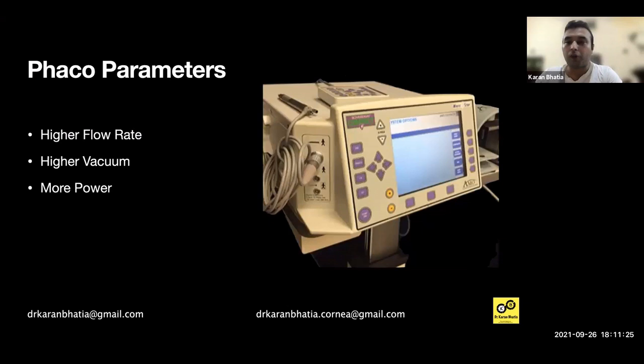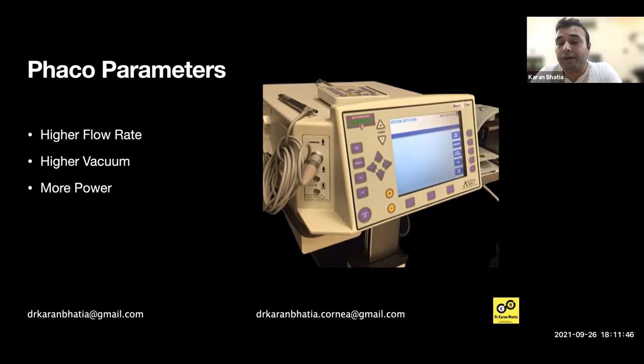For FACO parameters, you need a higher flow rate and higher vacuum in such cases. I would suggest for beginner surgeons, if you're using around 350-370 vacuum, increase it to about 400-420. I prefer to use the panel mode in all my cases. The difference between panel mode and linear mode is that panel is like an on-off switch — maximum vacuum comes immediately when you press, and drops to zero when you lift your foot. You need more FACO power in such cases — don't be afraid to go to 80-90% FACO power.